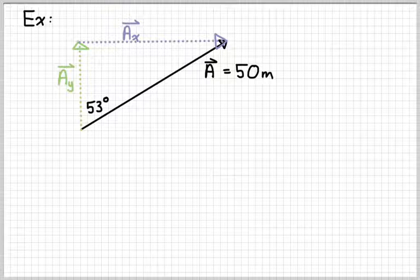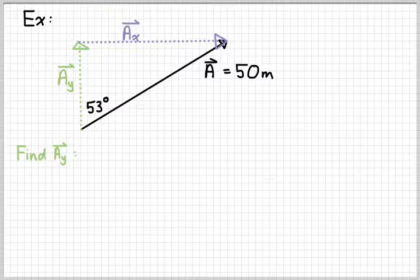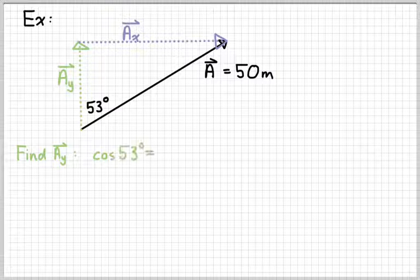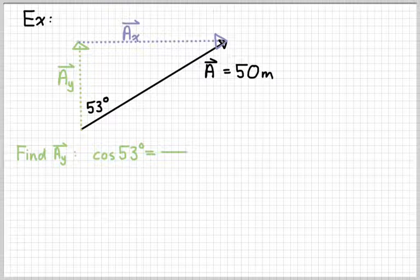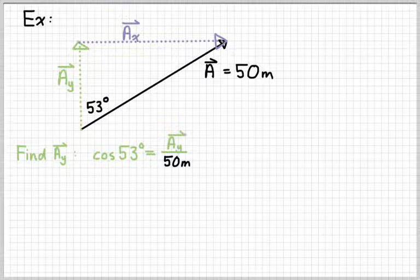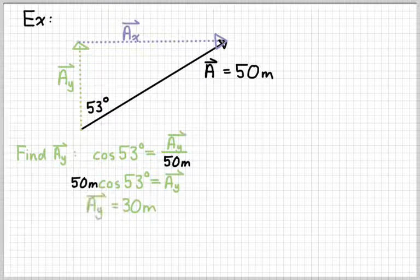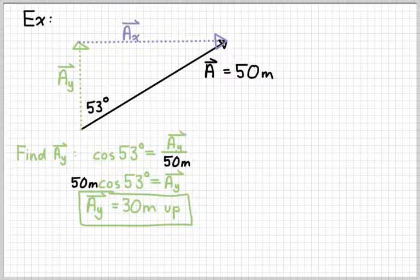So vector A, there are the two components. Suppose we know that A is 50 meters in length and we know that it is 53 degrees to the right of vertical. So that angle there is 53 degrees. So let's suppose we wanted to find Ay first. Ay is the adjacent side of my triangle. So I'm going to use the cosine function. So I'm going to write cosine 53 degrees. And then the adjacent side is Ay, the thing we're looking for, and the hypotenuse is A, the 50 meters. And so multiplying both sides by 50 meters we would figure out that Ay is equal to 30 meters. Don't forget about the direction, 30 meters going up. So we would say that the vertical component of A is 30 meters up.